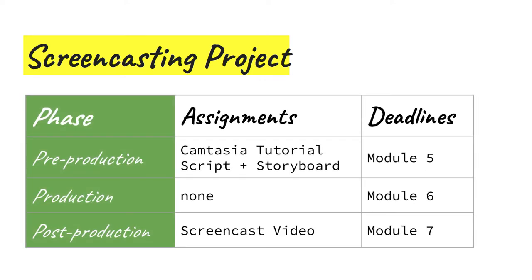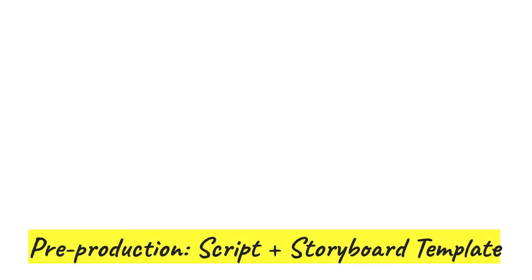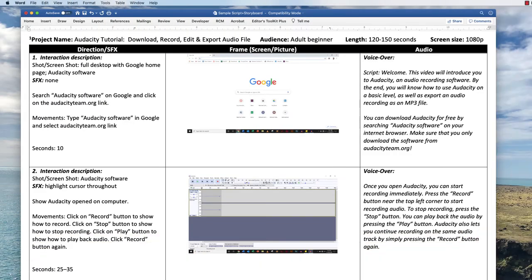The project has interrelated assignments, all of them completed as an individual. In Module 5 there are two pre-production assignments: you'll complete the Camtasia tutorial and create a script and storyboard. There's nothing due in Module 6, which is Thanksgiving week; however, you'll be busy with the production phase of the project. At midweek in Module 7, it's the deadline to submit your screencast video. The script and storyboard for your screencast is due at the end of the week. My lecture discusses why these are critical to produce a good screencast, and I provided a template for you to use in the script and storyboard assignment description on Canvas.